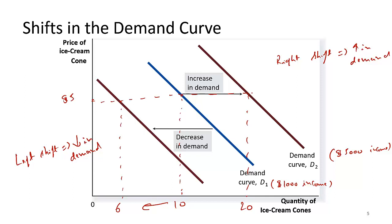If something increases demand, it's a right shift; if something decreases demand, it's a left shift. One important thing to point out: always think in terms of left and right when discussing shifts — whether for the demand curve or the supply curve. Never think in terms of up and down, because in supply, shifting right often means shifting toward the downside, which is an increase. Down doesn't mean decrease in supply. So always think in terms of right or left shift.